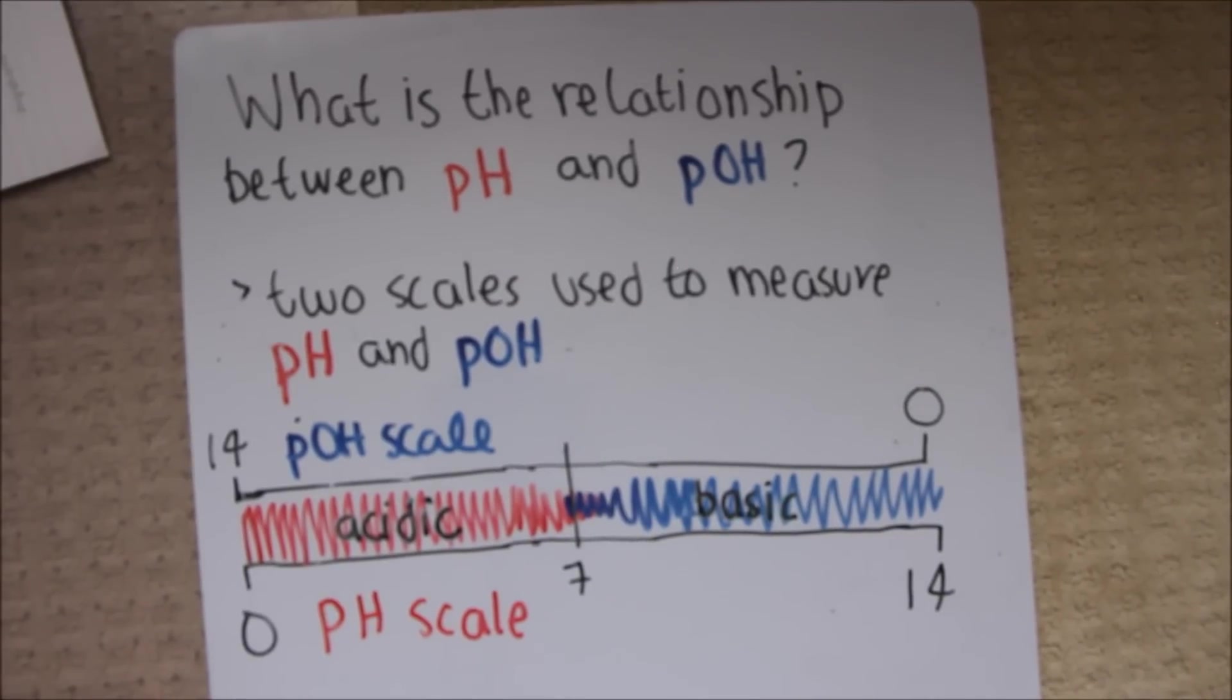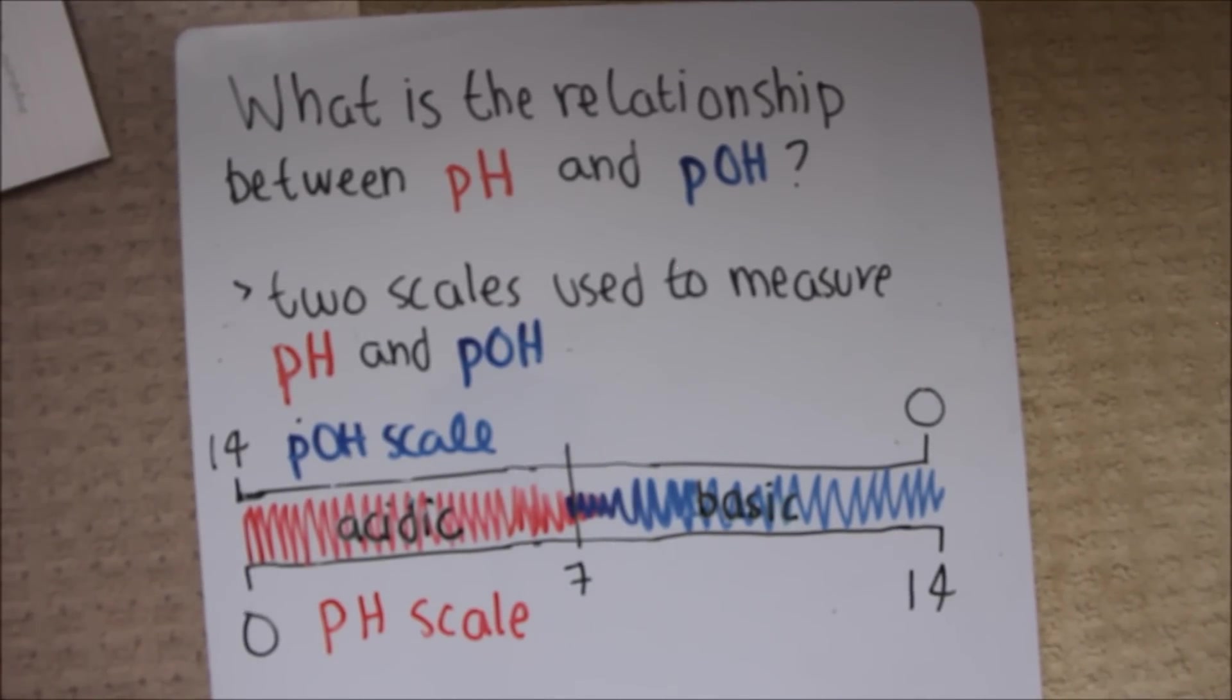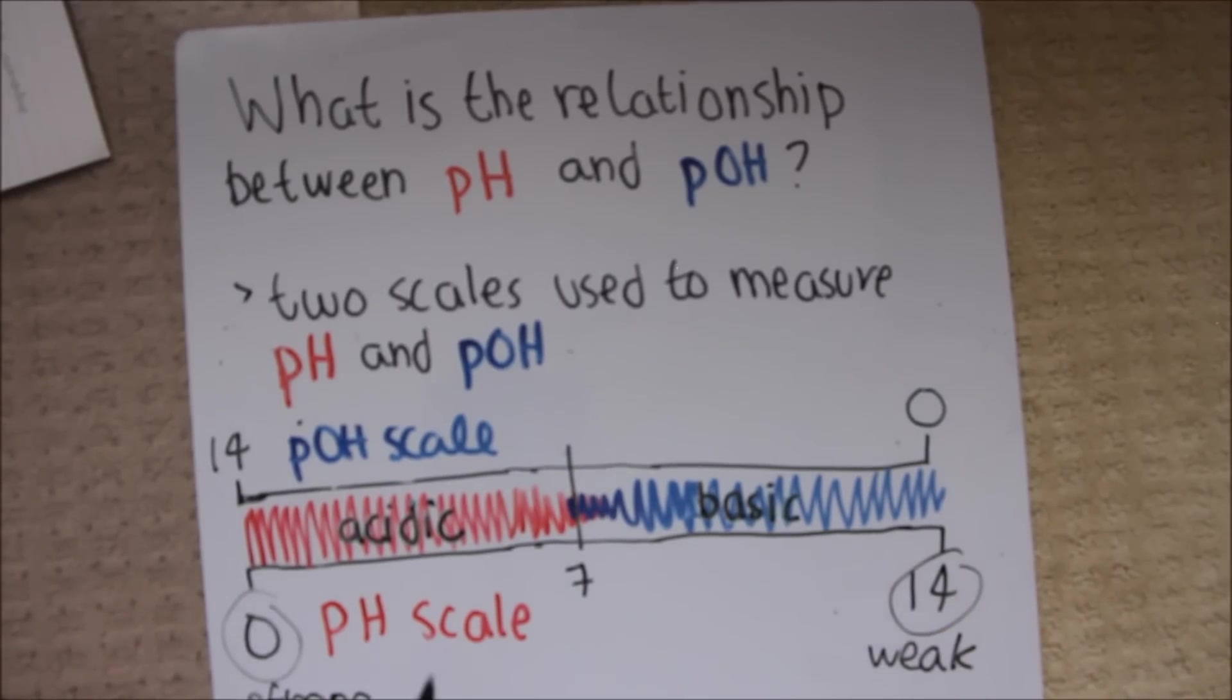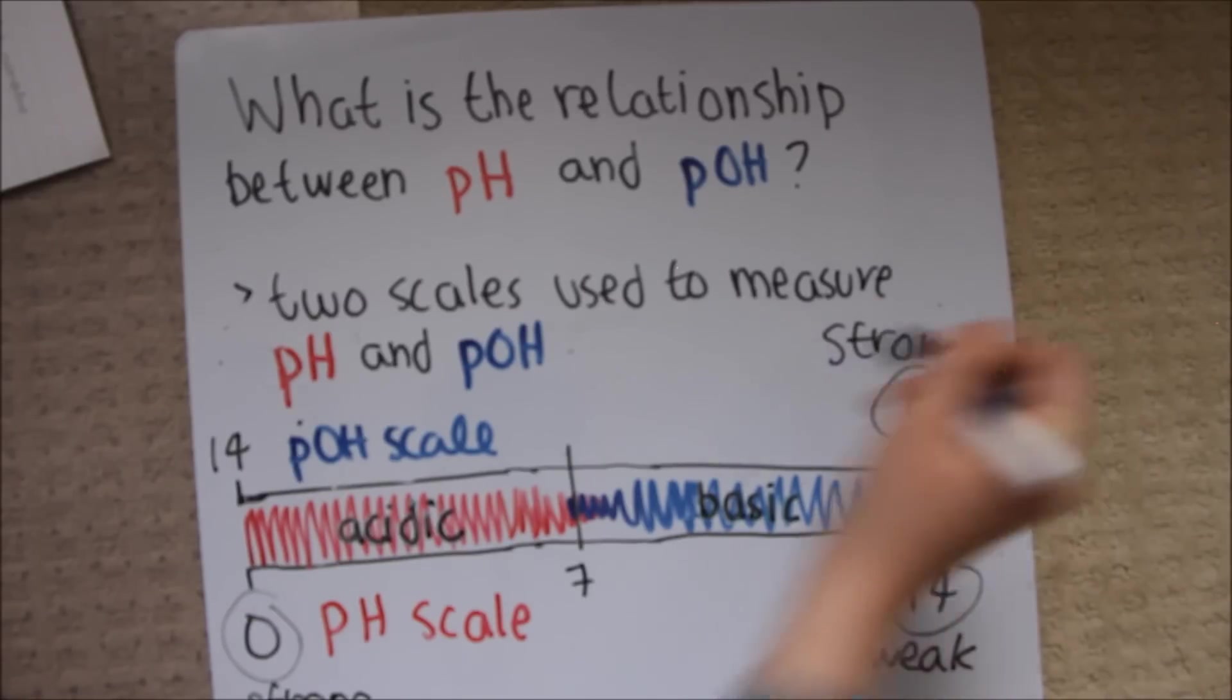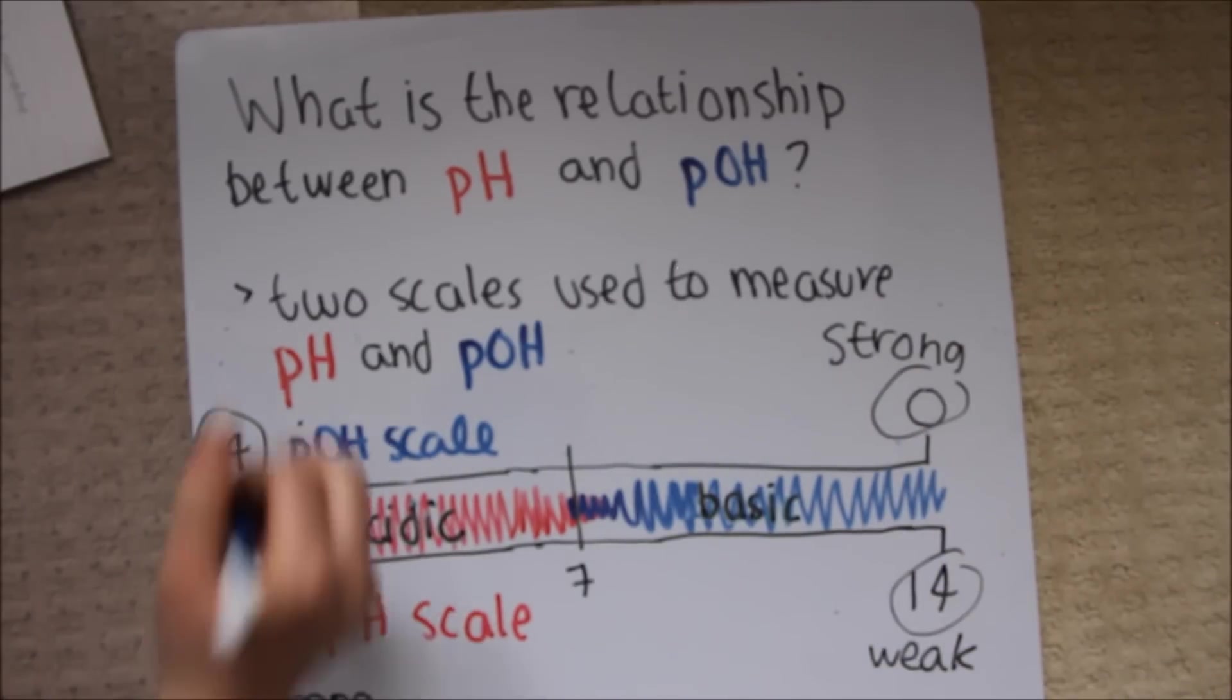What is the relationship between pH and pOH? In chemistry, we use two scales to measure the acidity or the basic nature of a substance. The first scale you're already probably familiar with is called the pH scale. The pH scale varies from 0 to 14, where 0 is a strong acid and 14 is a weak acid. The pOH scale is the pH scale's alter ego and varies from 0 to 14 as well. However, 0 is a strong base and 14 is a weak base.